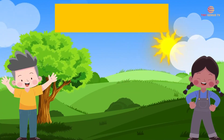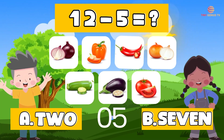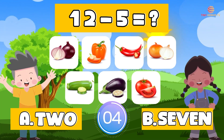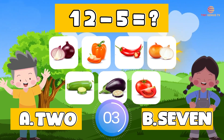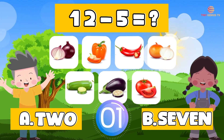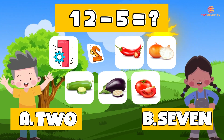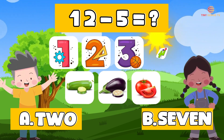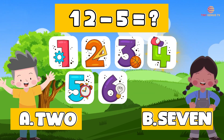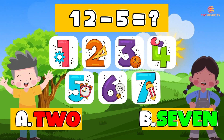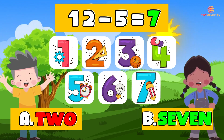How much is 12 minus 5? 1, 2, 3, 4, 5, 6, 7. 12 minus 5 is 7.